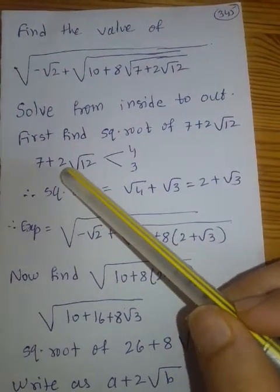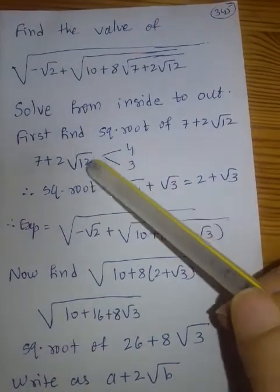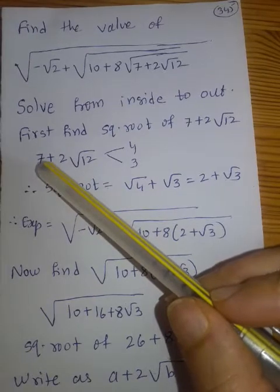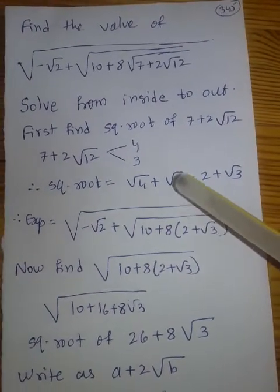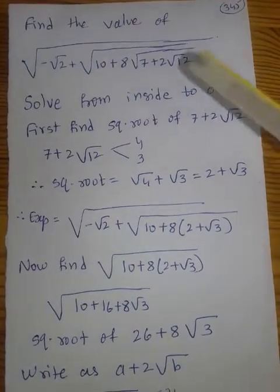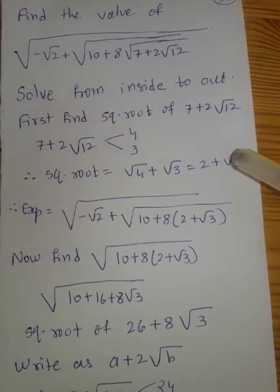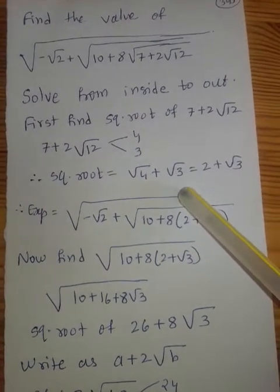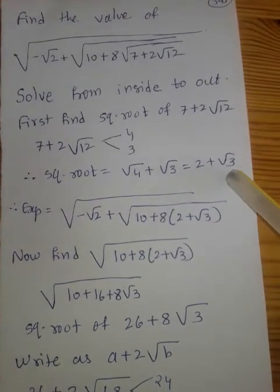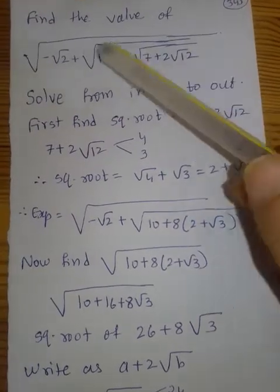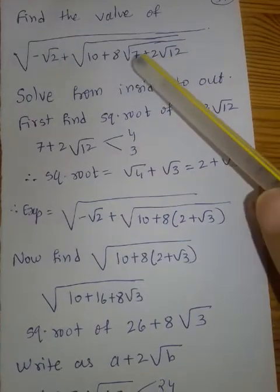Square root of (7 + 2√12): 4 × 3 = 12 and 4 + 3 = 7, so the square root is √4 + √3 = 2 + √3. Now I am substituting this value into the next expression. So the expression now becomes the next level with 2 + √3 substituted in.